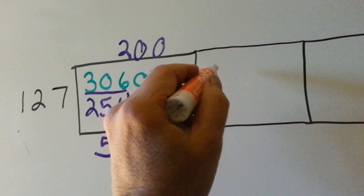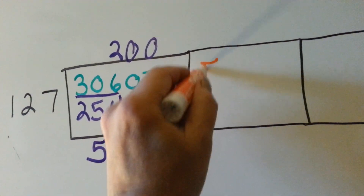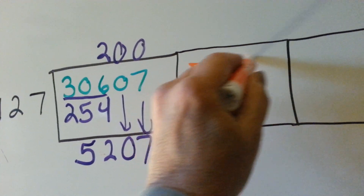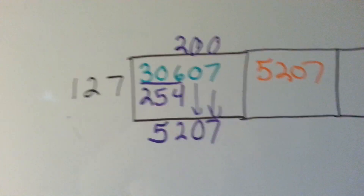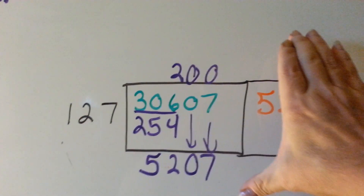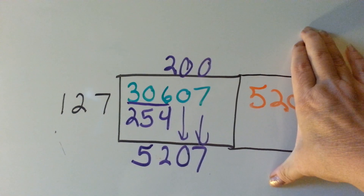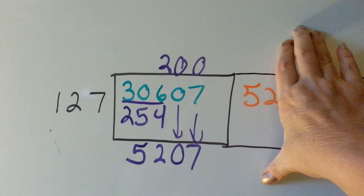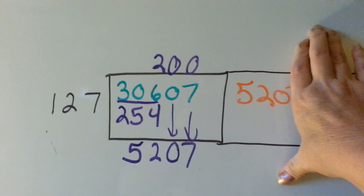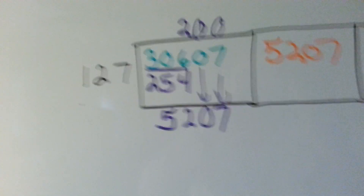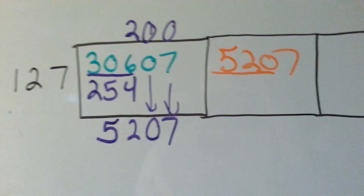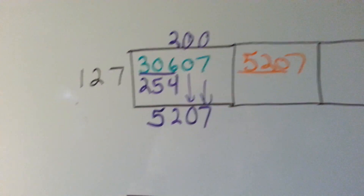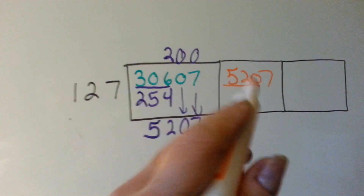Now it's this number's turn to go in a box and we ask ourselves how many times can 127 go into this number. It can't go into 52, but it could go into 520, so that's the number we're going to put it into. How many times can 127 go into 520?